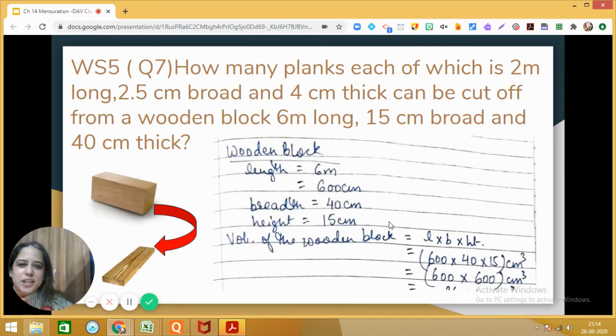Students, let us solve this interesting question from the chapter mensuration and let us see which 3D shape it is based on. I'm reading the question: How many planks, each of which is 2 meters long, 2.5 centimeters broad, and 4 centimeters thick, can be cut off from a wooden block 6 meters long, 15 centimeters broad, and 40 centimeters thick?